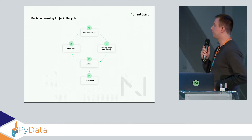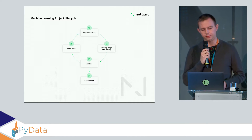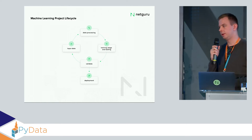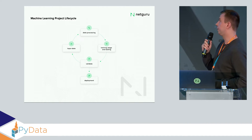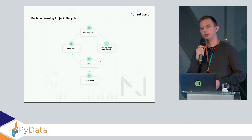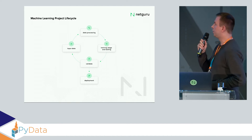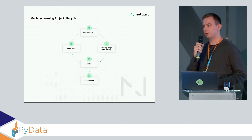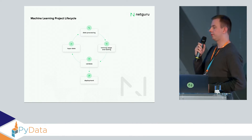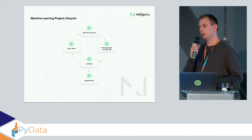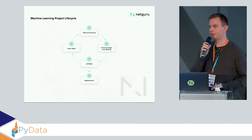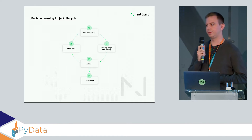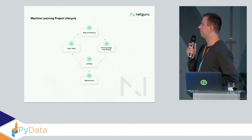This is a typical machine learning pipeline: we have a data engineering phase, then training, then deployment, and we go back to data engineering and training — iteratively building models. Each pass through that loop is one experiment, and all information about that experiment should be stored so we can reproduce it: the Python version, the library versions, perhaps the Docker image, the metrics achieved, the seed for the random number generator, and so on.